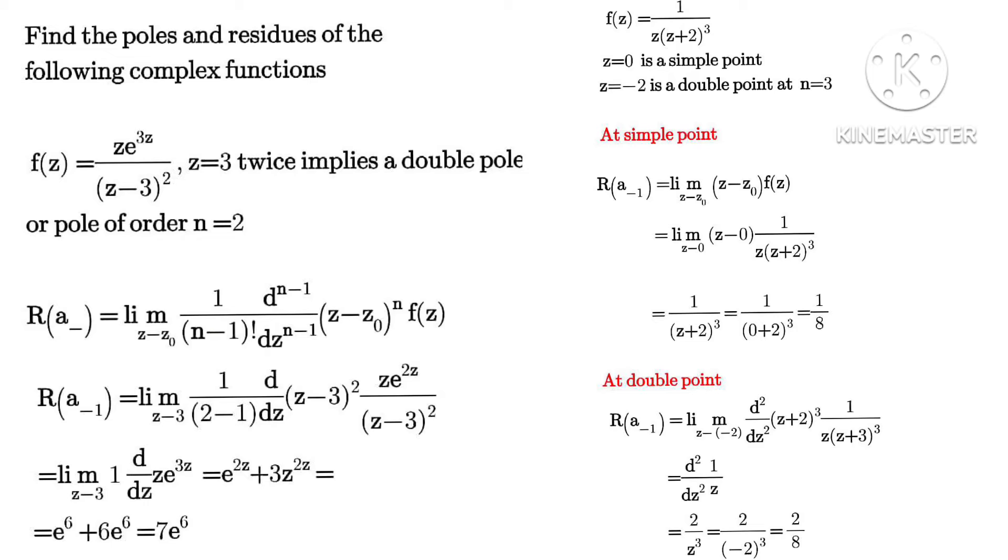Now since it is a double pole, we're using the second formula for n poles, that is for double poles. Recall from the previous videos that I gave you this formula, so having n to be equals to 2...